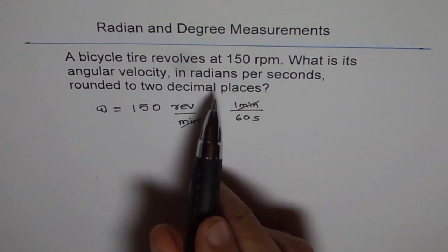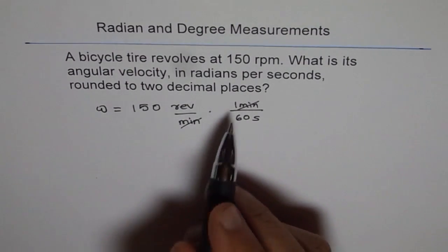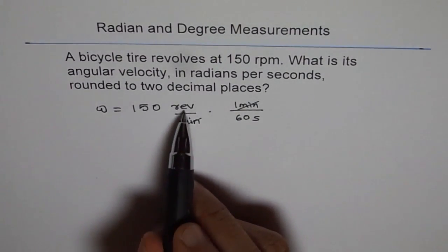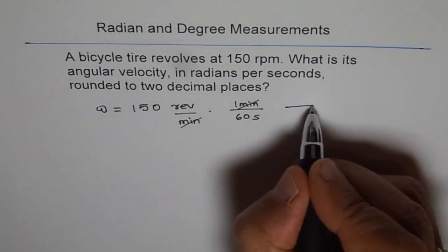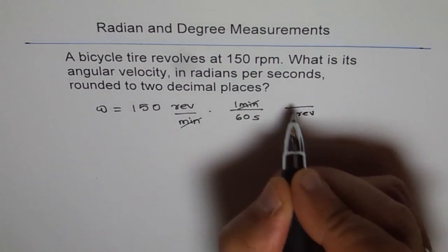But what do we need? We need radians per second. Now how do I get radians? That is, we need to check in one revolution how many radians are there. And we know one revolution is two pi radians.